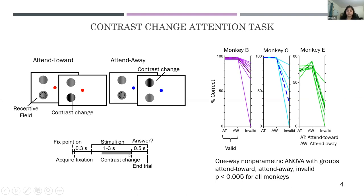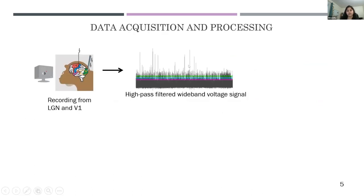I want to draw your attention to the trial structure — specifically the gray bar representing the last one second before the contrast change. That's the time period used for analyzing all neuronal recording data, which ensures that visual stimulation is exactly the same on each trial, allowing us to compare different attentional conditions. We recorded from LGN and V1 while monkeys performed this task using single or multi-channel electrodes, obtained the raw voltage signal, applied filtering, and extracted the high-frequency wideband signal.